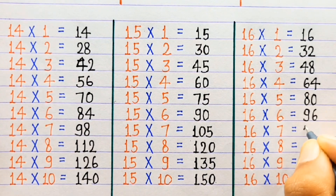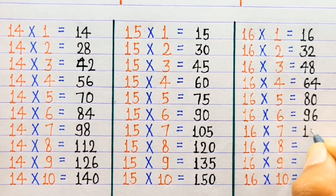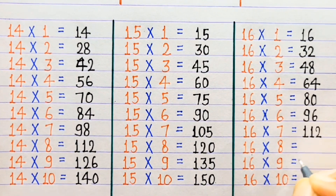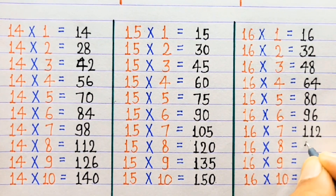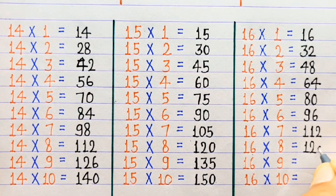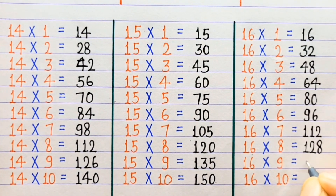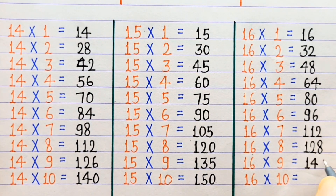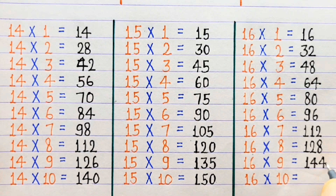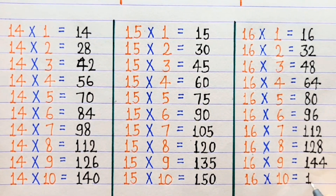16×7=112, 16×8=128, 16×9=144, 16×10=160.